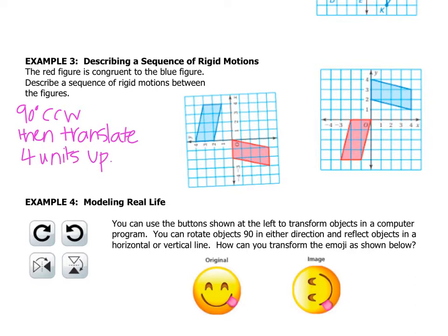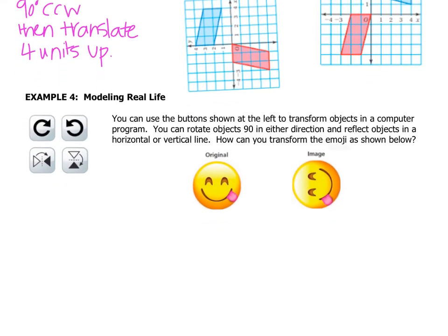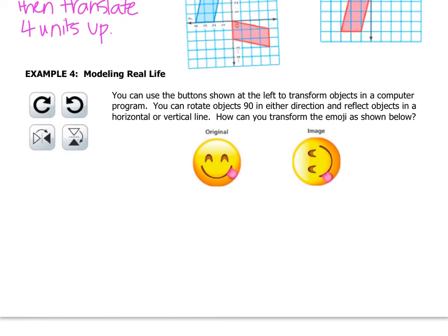All right, let's check out our last example, example 4. You can use the buttons shown at the left to transform objects in a computer program. You can rotate objects 90 in either direction and reflect objects in a horizontal or vertical line. How can you transform the emoji as shown below? So I'm going to create another emoji that I can turn around.